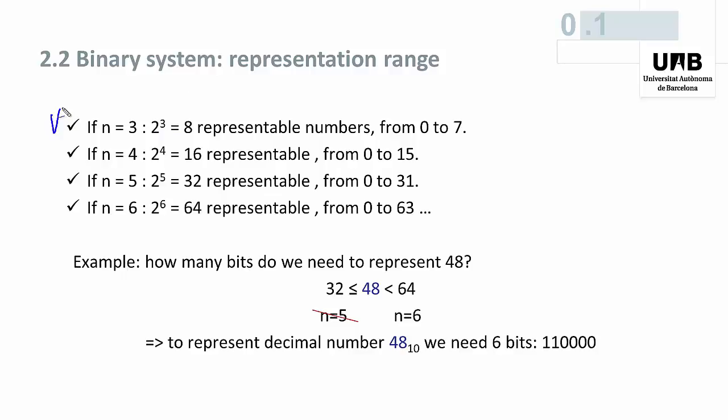More examples: with 3 bits we can represent all numbers from 0 to 7; with 4 bits, all naturals from 0 to 15; with 5 bits, all naturals from 0 to 31; and with 6 bits, all natural numbers from 0 to 63.